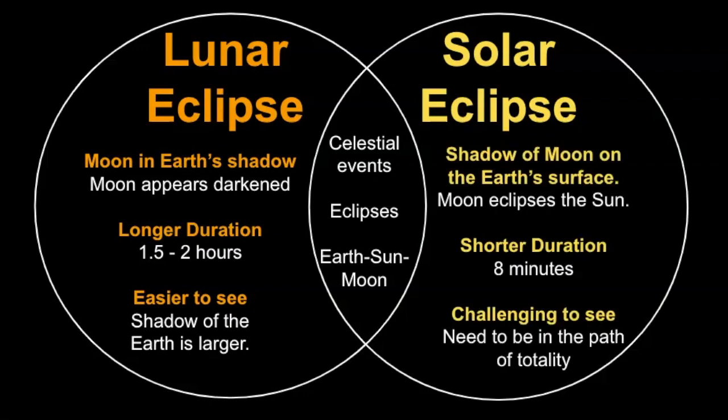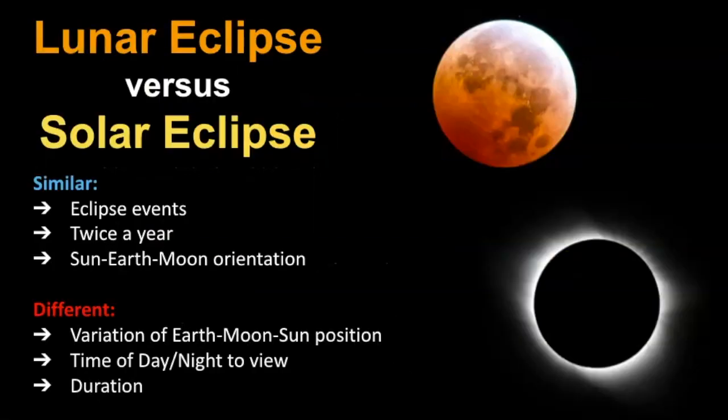Now, a solar eclipse is different because the shadow of the moon is on the Earth's surface. So the moon is eclipsing the sun. It's also shorter in duration. It only lasts about eight minutes. And it can be challenging to see because you need to be in the path of totality. So I hope this was helpful for you to know the difference and how a lunar eclipse happens and how a solar eclipse happens and how they're both similar and different.